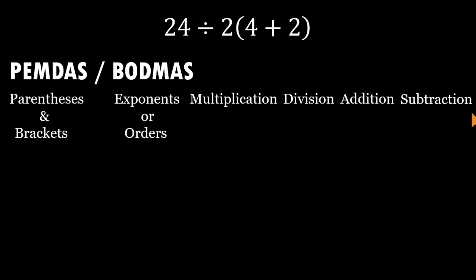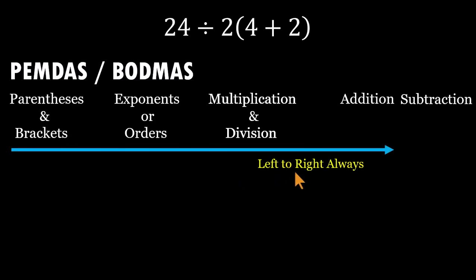But here's the detail most people miss. Multiplication and division stand on the same level. Neither one outranks the other. And when operations share equal priority, we go left to right, just like reading a sentence. The same holds for addition and subtraction. Equal priority and left to right always.